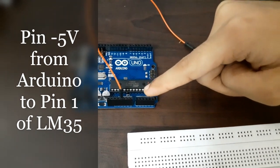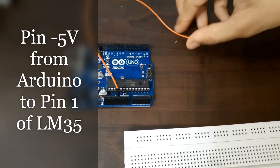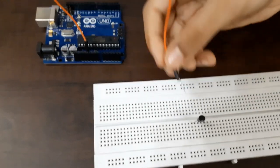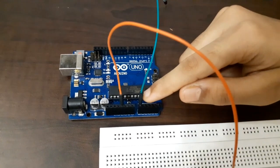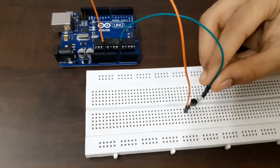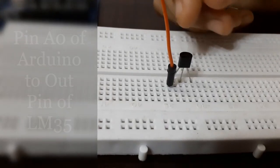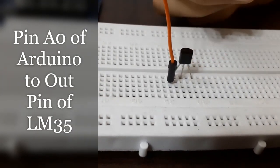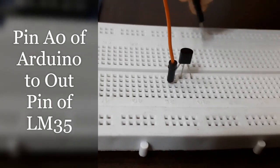Here, the fourth pin is 5 volts. And we have to connect it to VCC. Here, the first pin is A0, which we have to connect to output. So, the middle pin is the output pin. So, we will connect A0 to it.